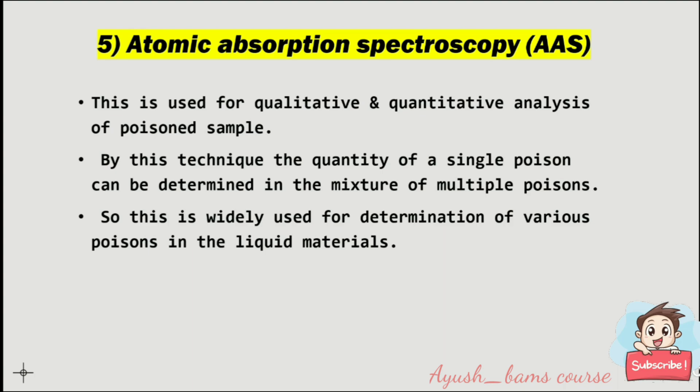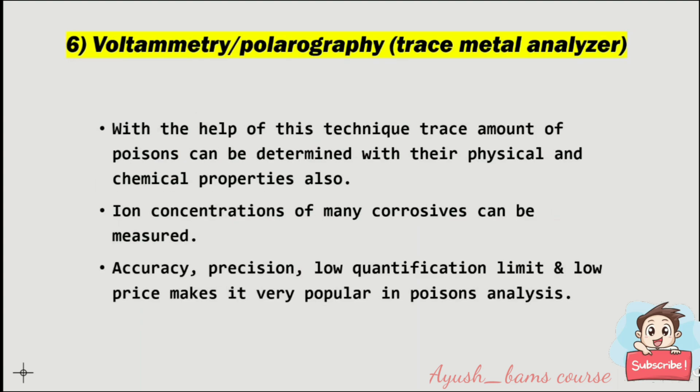Atomic absorption spectroscopy is used for qualitative and quantitative analysis of poisoned samples. By this technique, the quantity of a single poison can be determined in a mixture of multiple poisons, making it widely used for determination of various poisons in liquid materials. Polarography (trace metal analyzer): with this technique, trace amounts of poisons can be determined along with their physical and chemical properties. Ion concentrations of many corrosives can be measured. Accuracy, precision, low quantification limit, and low price make it very popular in poison analysis.